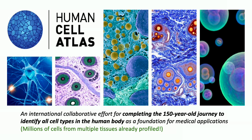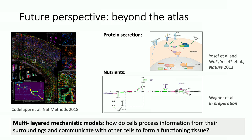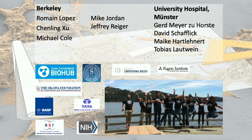We're not the only ones excited about single-cell technology. There is internationally wide enthusiasm and resources going into this, organized under the Human Cell Atlas, whose declared goal is to complete the 150-year-old journey to identify all cell types in the human body and how their composition changes in disease, as a foundation for information-derived medical applications in autoimmunity, infectious diseases, cancer, and others. What excites me most going forward is going beyond the atlas to develop mechanistic models explaining how tissues work and how cells dynamically interact. The SCVI model was a collaboration with Mike Jordan's group here at Berkeley.